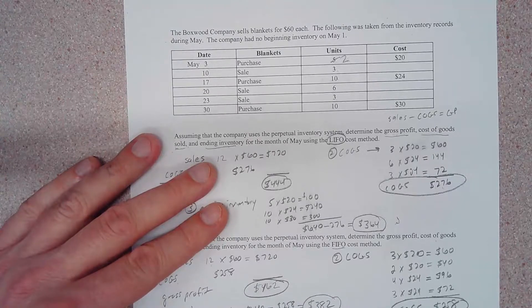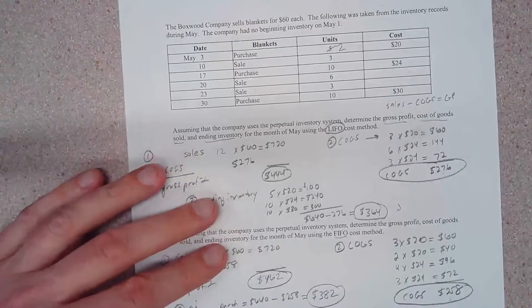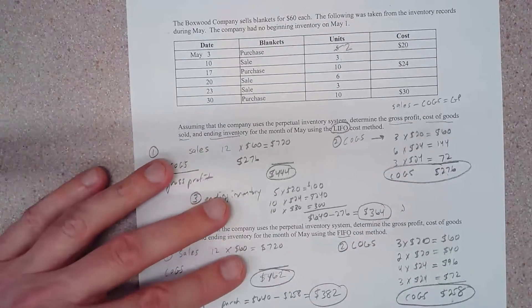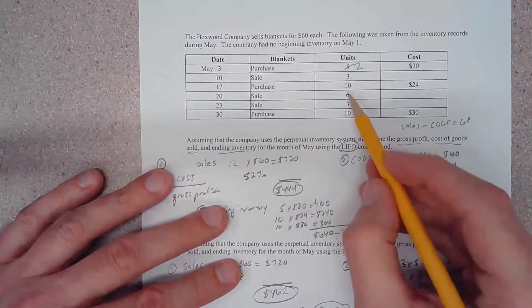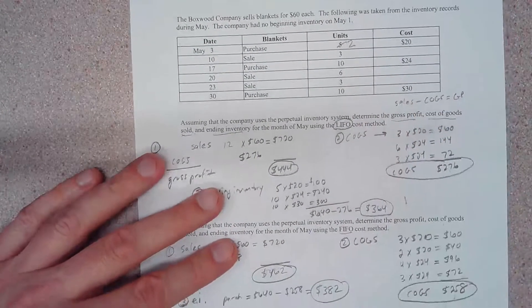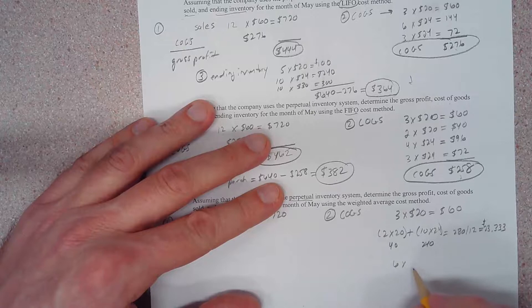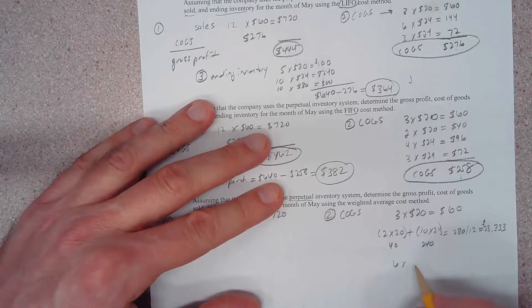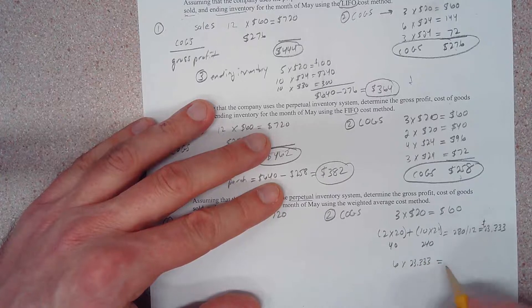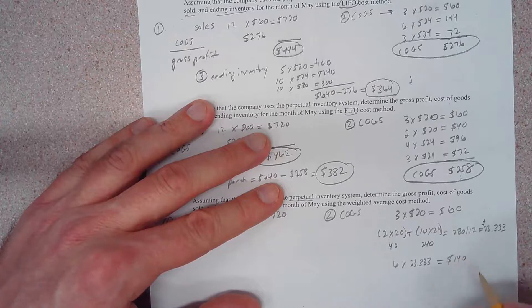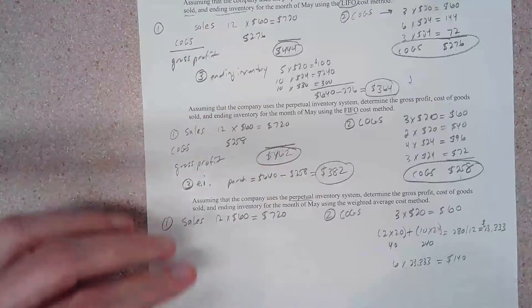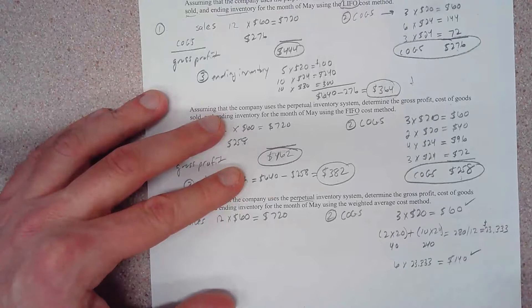If that's the case, then these 6 units are plotted as 6 times $23.33, and we're going to round up to $140. So we've got $60 and we've got $140 here.